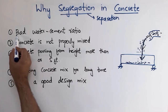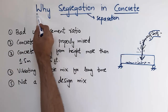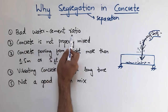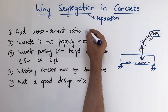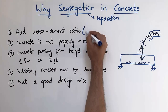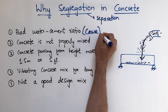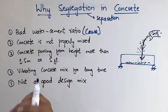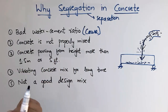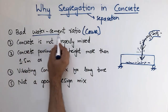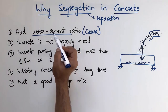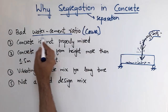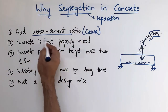The first factor is a bad water-cement ratio. This is the main cause of segregation in concrete. We should choose a good water-cement ratio to avoid segregation. We must be careful about the water-cement ratio while designing the concrete mix.